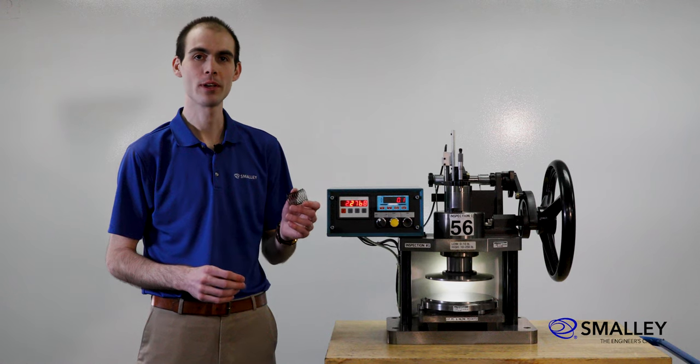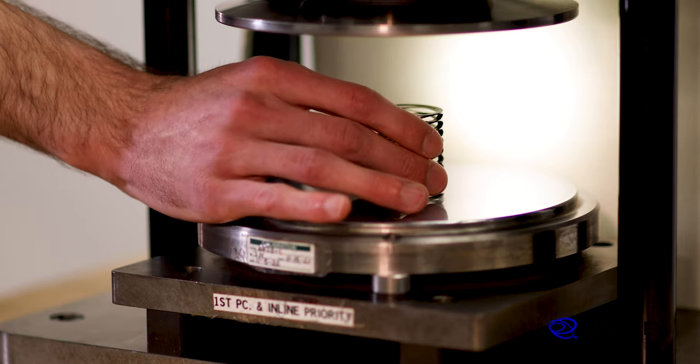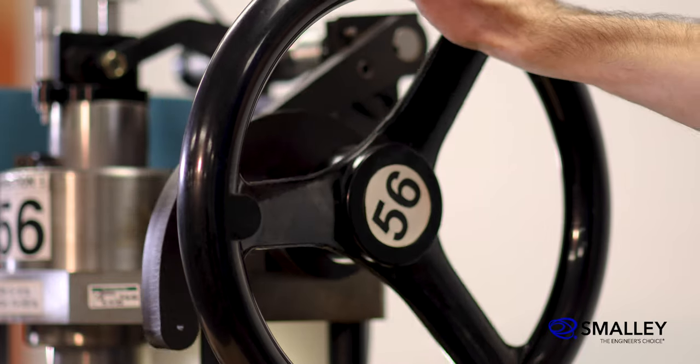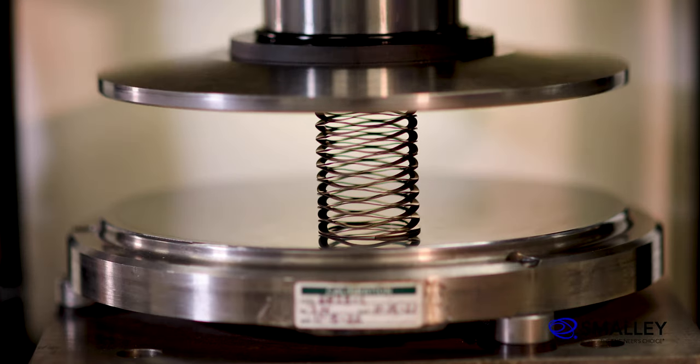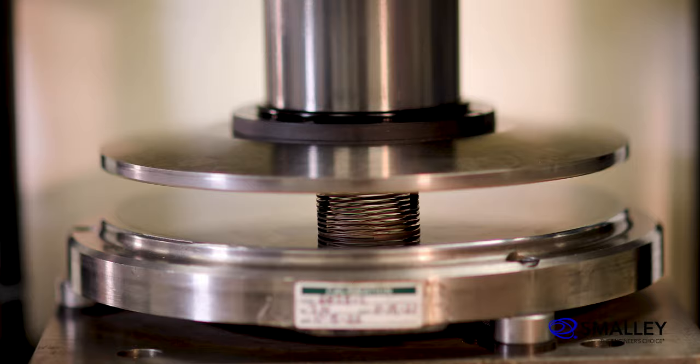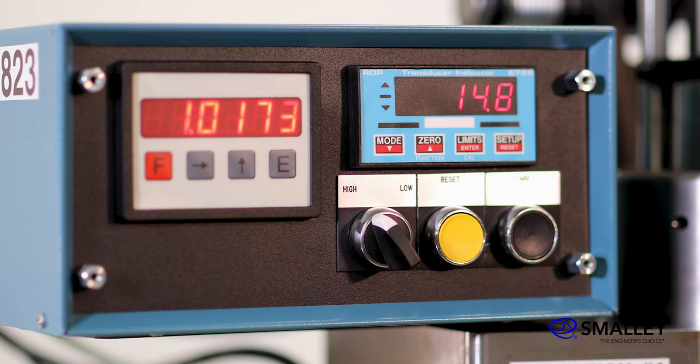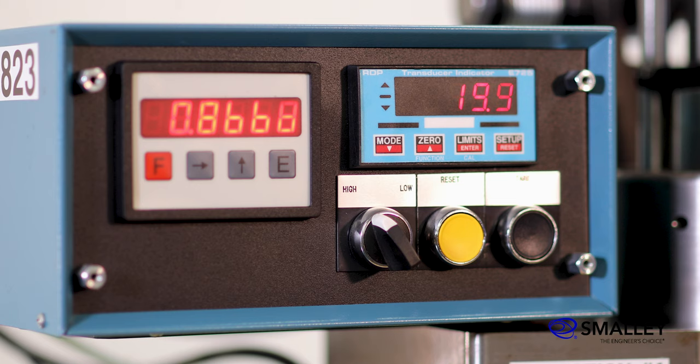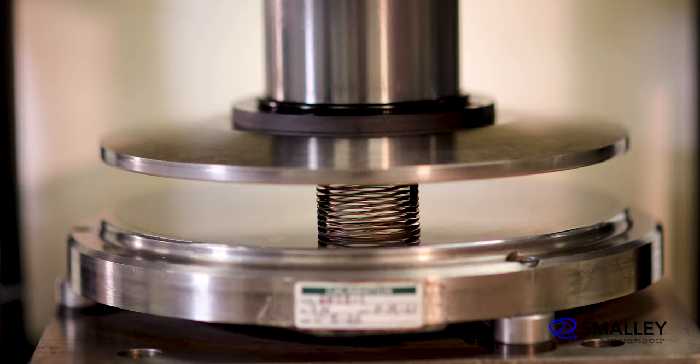To inspect the spring, I'll place it between the parallel plates and lower the upper plate using this wheel. As the upper plate contacts the spring, you can see the load readout increasing. At a height of 0.866 inches, the load came in at 19.9 pounds, which is in tolerance.